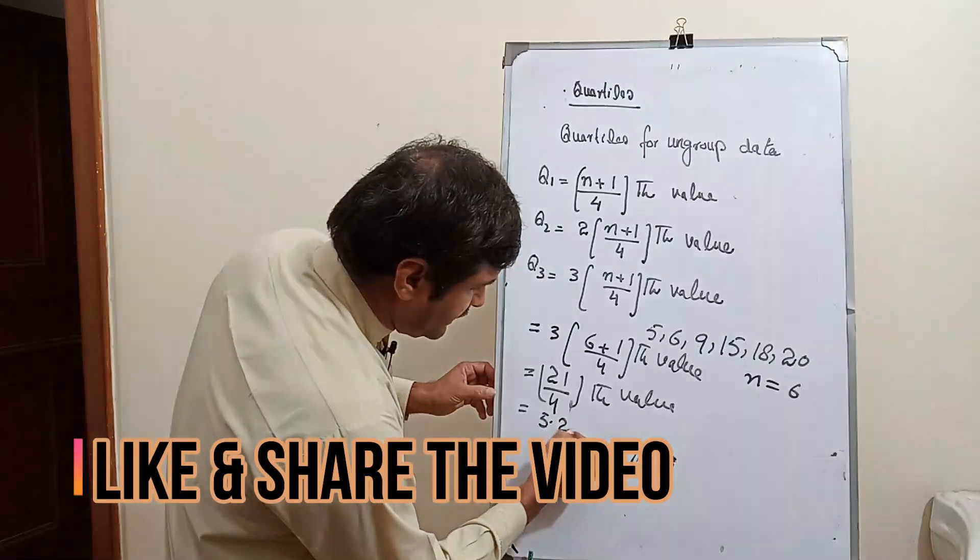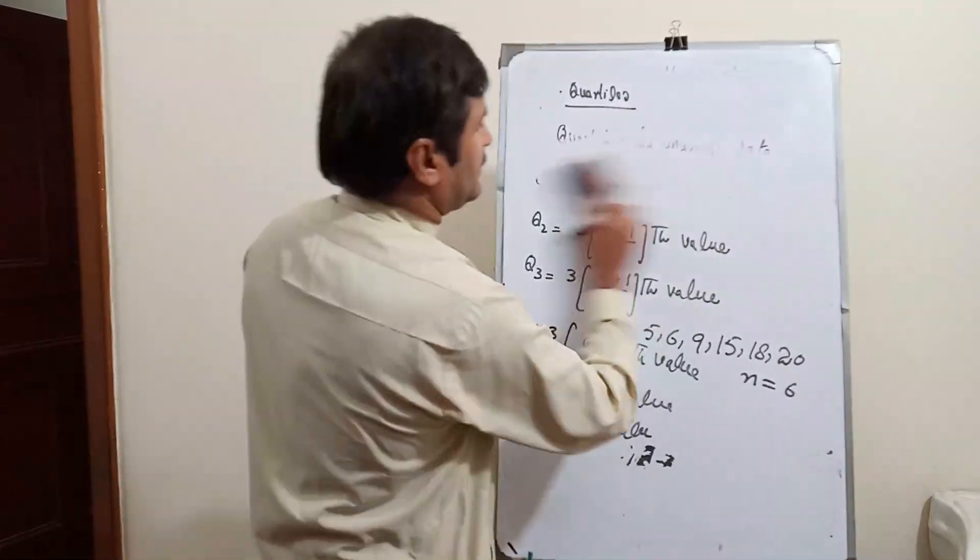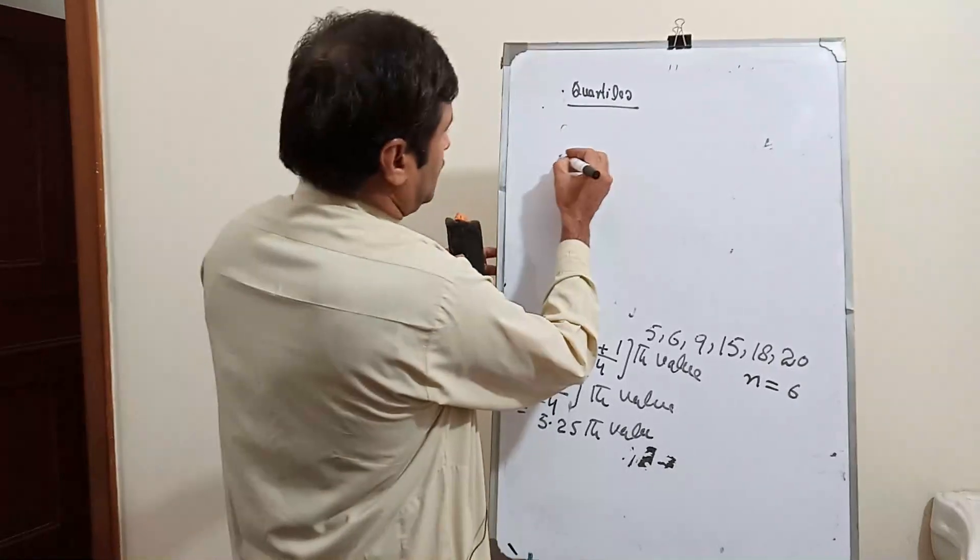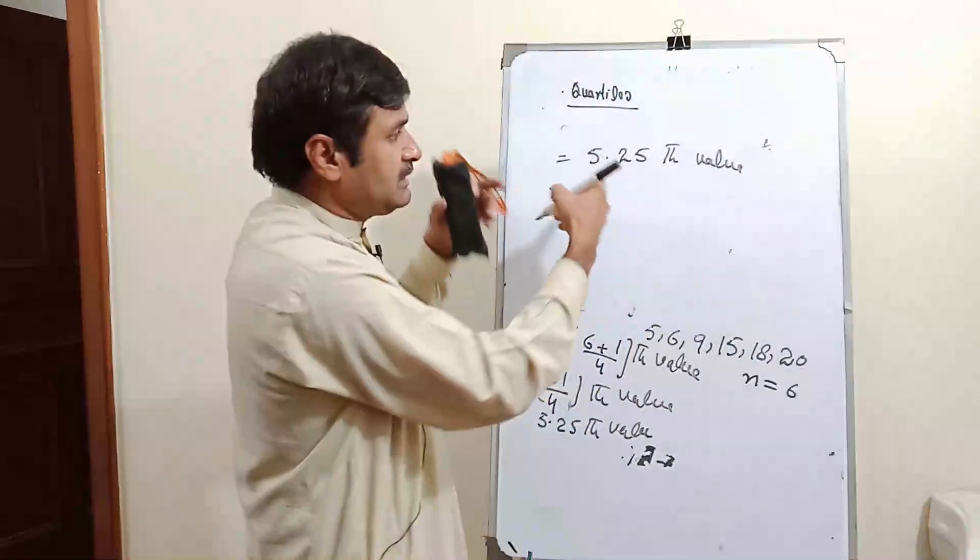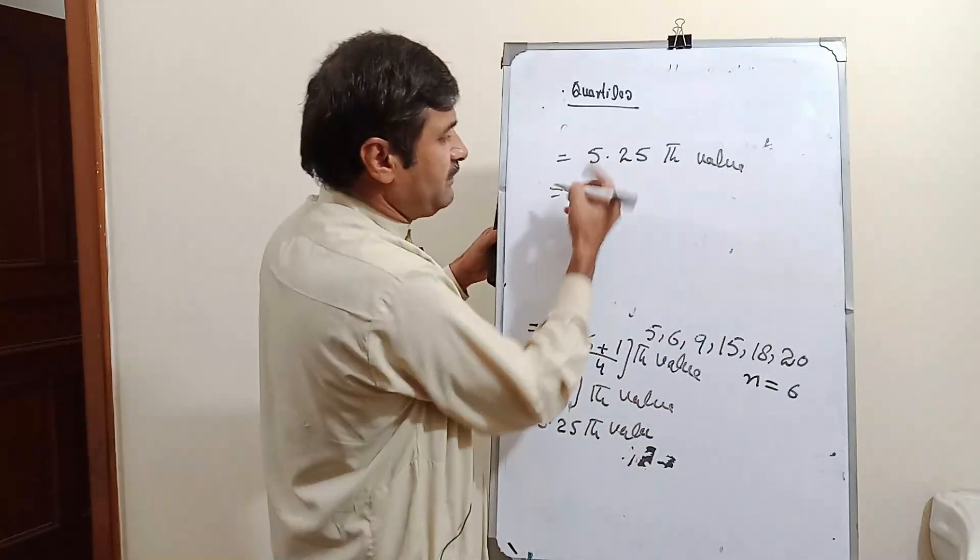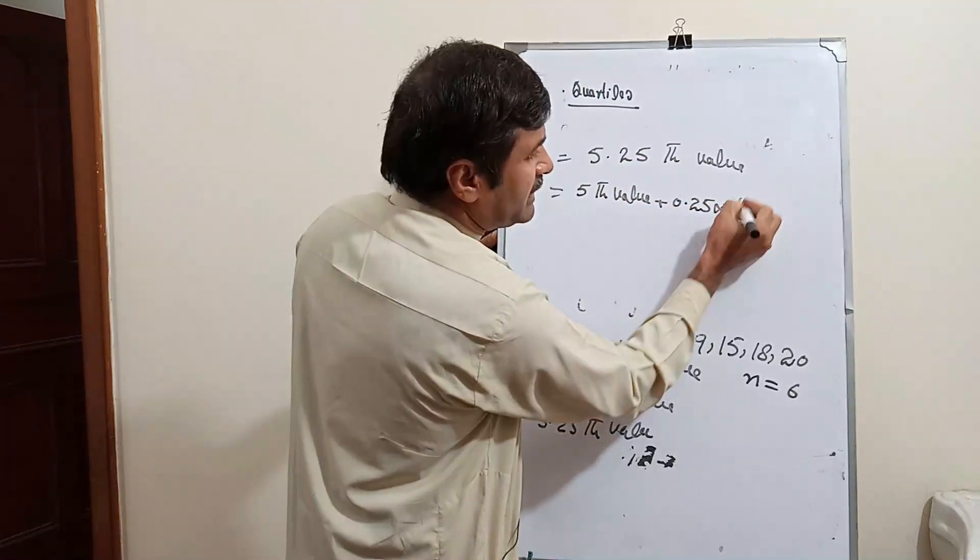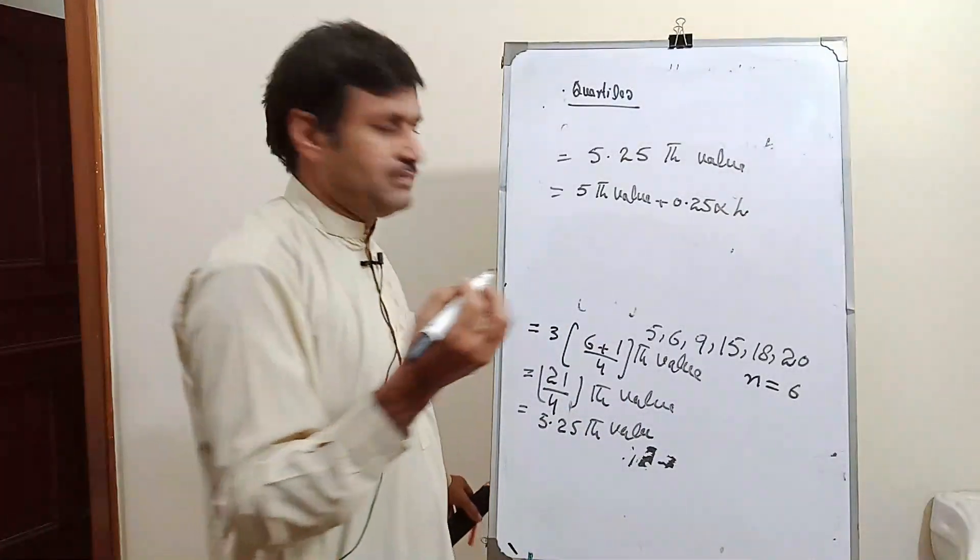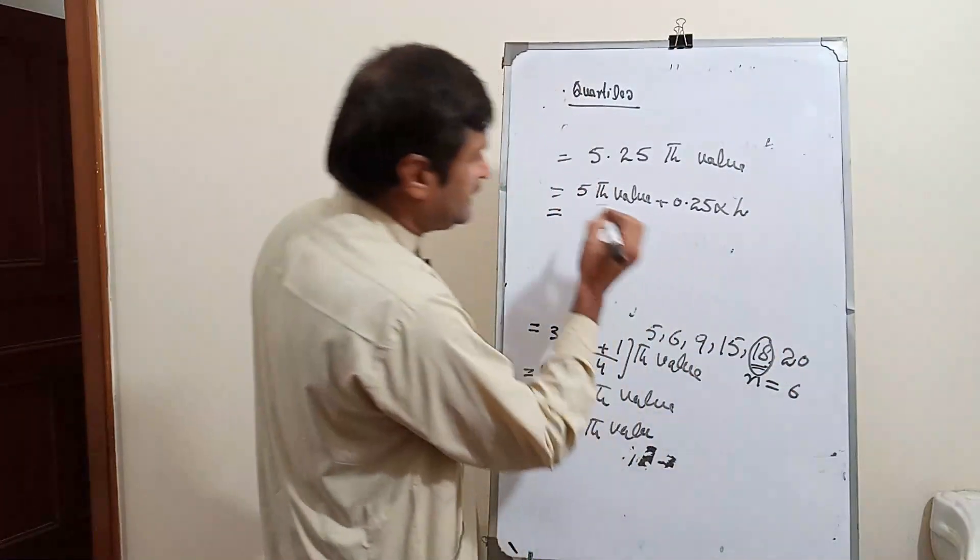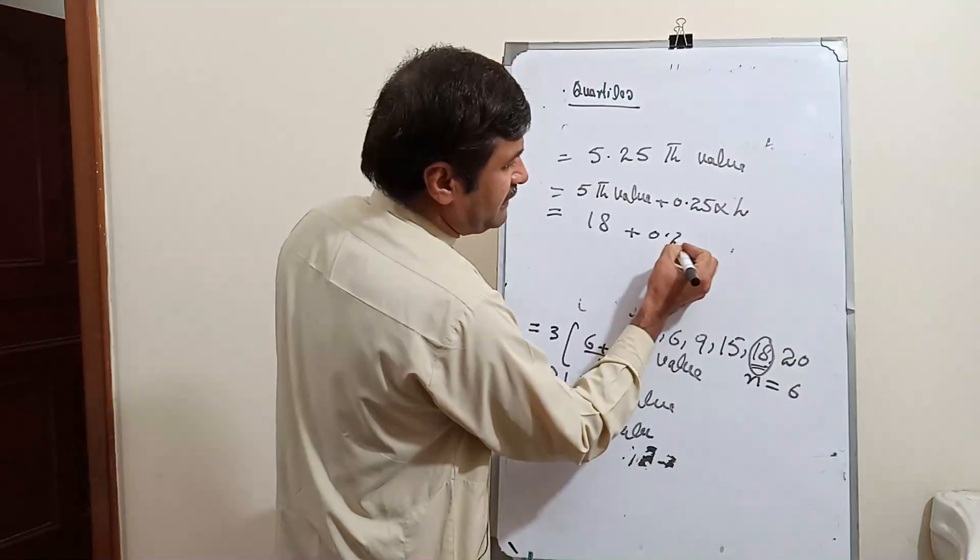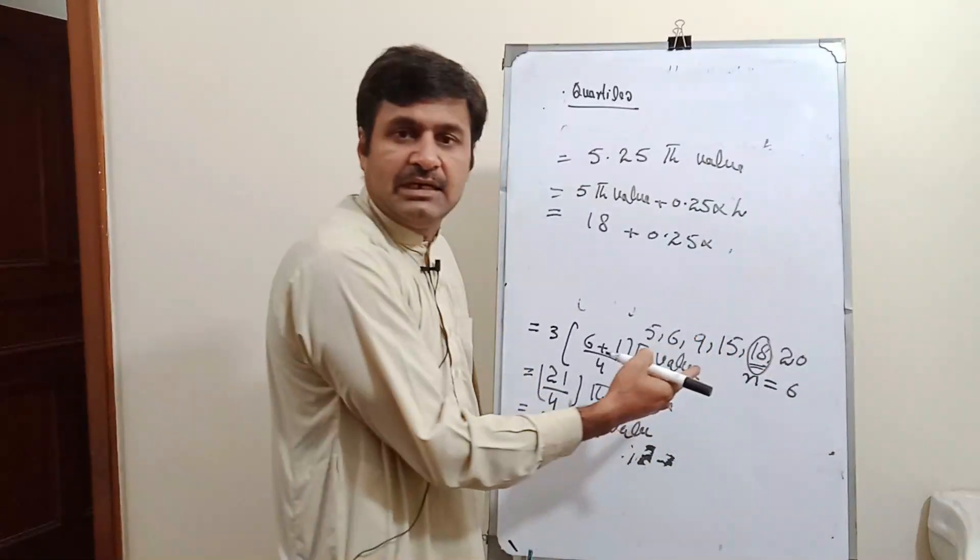5.25th value. This means the fifth value from ascending order values, which is 5.25th value equals fifth value plus 0.25 times h, where h is the difference between consecutive values. So the fifth value is 1, 2, 3, 4, 5, which is 18.